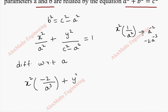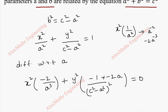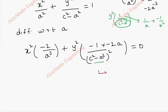In the same way, y² is a constant and 1/(c² - a²) is treated as a power of minus 1, so the derivative is −1/(c² - a²)². By chain rule, the differentiation of (c² - a²) is −2a. So the second term becomes +2ay² / (c² - a²)², and we shall take it to the other side.